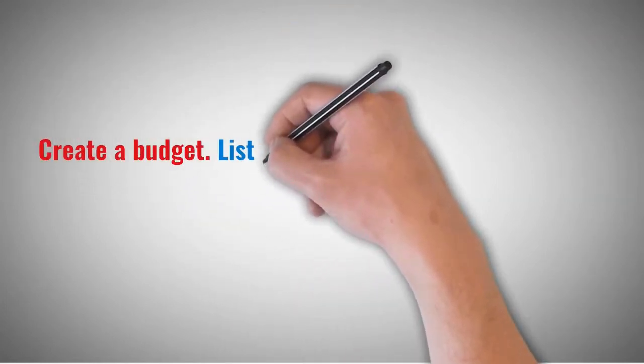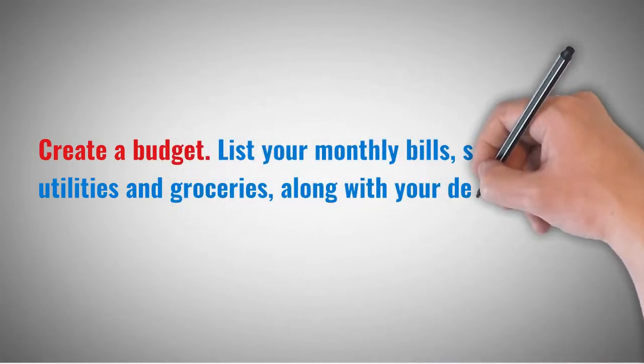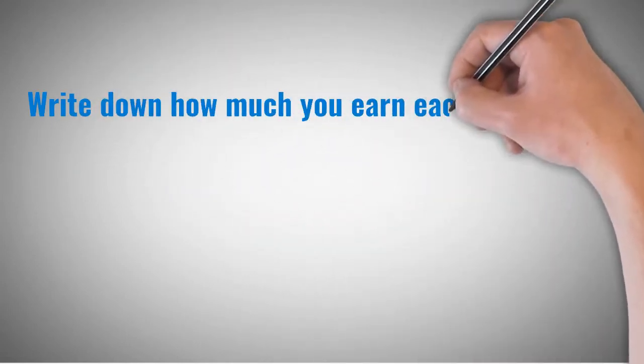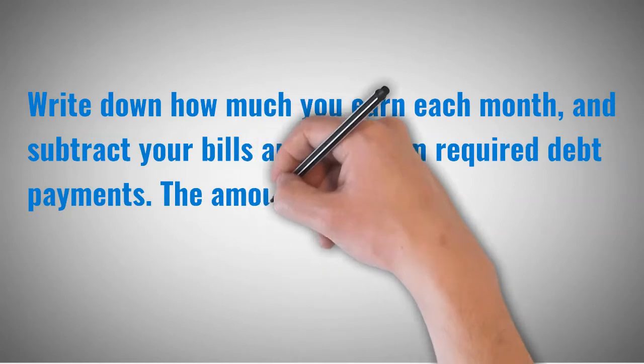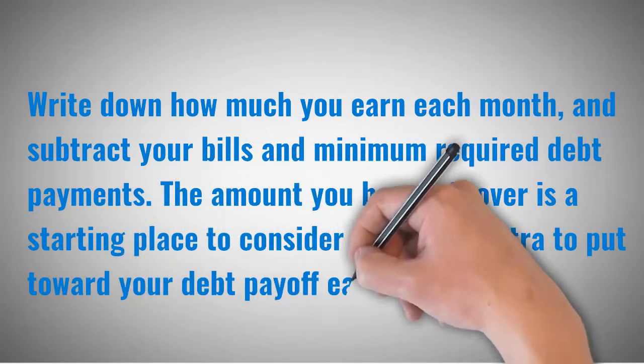Create a budget. List your monthly bills, such as rent, utilities and groceries, along with your debts, such as credit card balances and student loans. Write down how much you earn each month, and subtract your bills and minimum required debt payments. The amount you have left over is a starting place to consider how much extra to put toward your debt payoff each month.